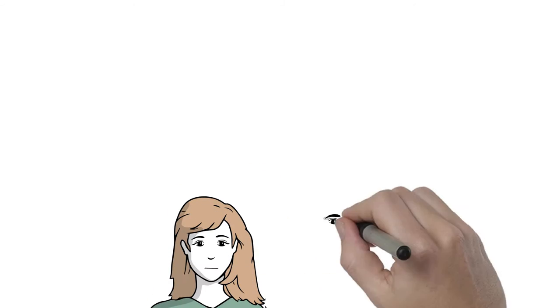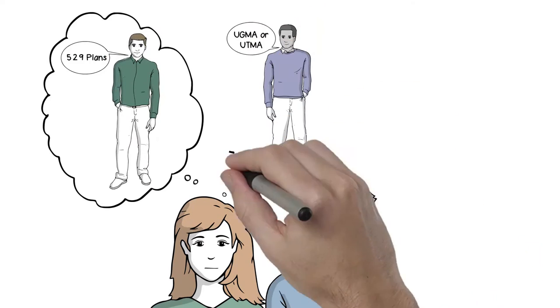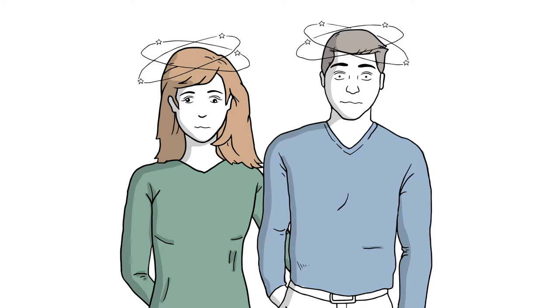Their broker recommended 529 plans. Their tax guide told them to get UGMAs or UTMAs. And the PTA president said just take out loans. But all that talk made their head spin.